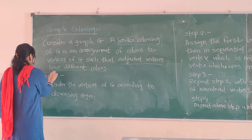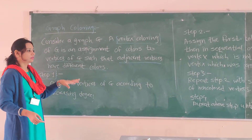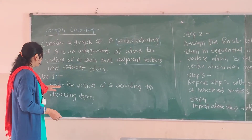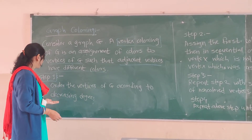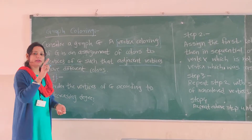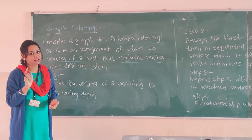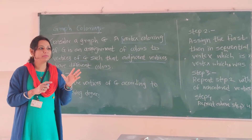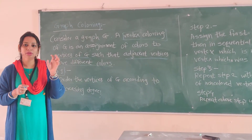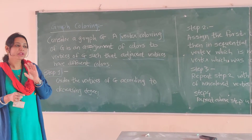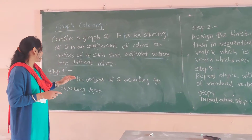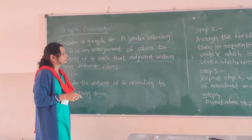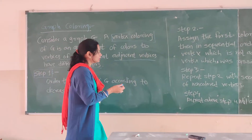Step 1 is that whatever graph we are having, arrange or order the vertices of graph G according to decreasing degrees. Degree is nothing but the total number of edges that are connected to that particular vertex. So arrange the vertices according to the decreasing degrees.